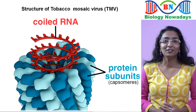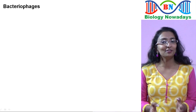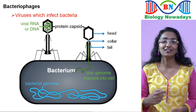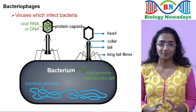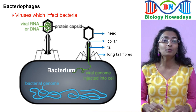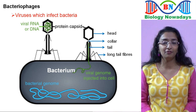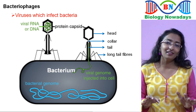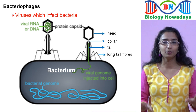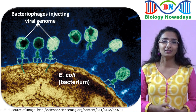Do you know what bacteriophages are? The word 'phage' means eater, so bacteriophage means bacteria eater. Bacteriophages are viruses that infect bacteria. They have a head, collar, tail, and tail fibres — the head contains the genetic material. Once attached to a bacterial cell, the bacteriophage injects its viral genetic material into the bacterium, disrupting normal synthesis of proteins and nucleic acids. The bacterium is forced to manufacture viral particles instead. Within minutes, the bacterial cell ruptures and hundreds of new bacteriophages are released to infect other bacterial cells.